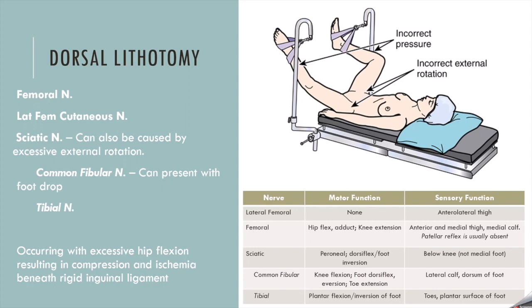On the posterior aspect, you have the sciatic nerve, which branches into the common fibular — or common peroneal — and the tibial nerve. The sciatic nerve exits the greater sciatic foramen, goes through the greater sciatic notch, and travels down the posterior aspect of the thigh. This is a pretty rigid structure, so when you're putting the legs into high flexion in high lithotomy, you can experience stretching of the sciatic nerve, which is where these pathologies arise.